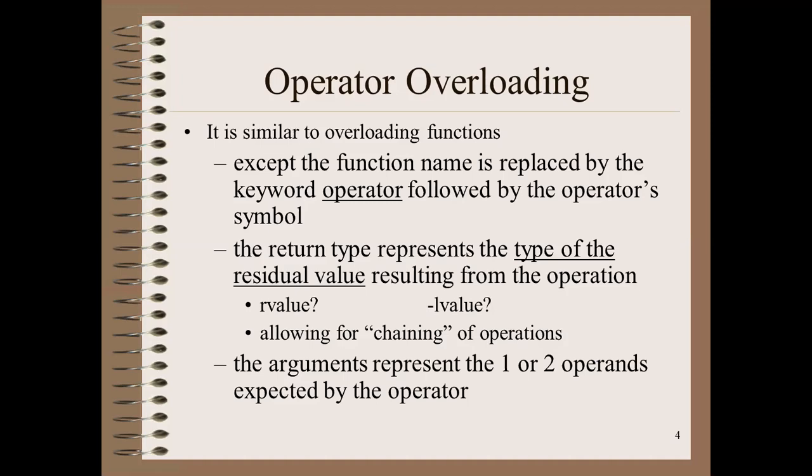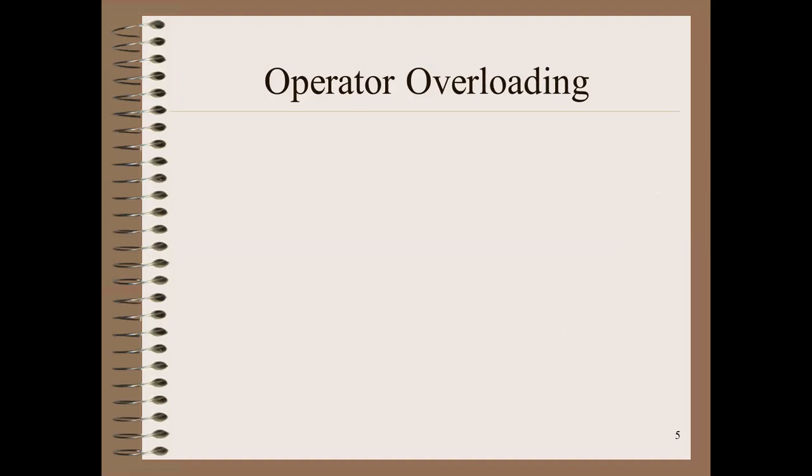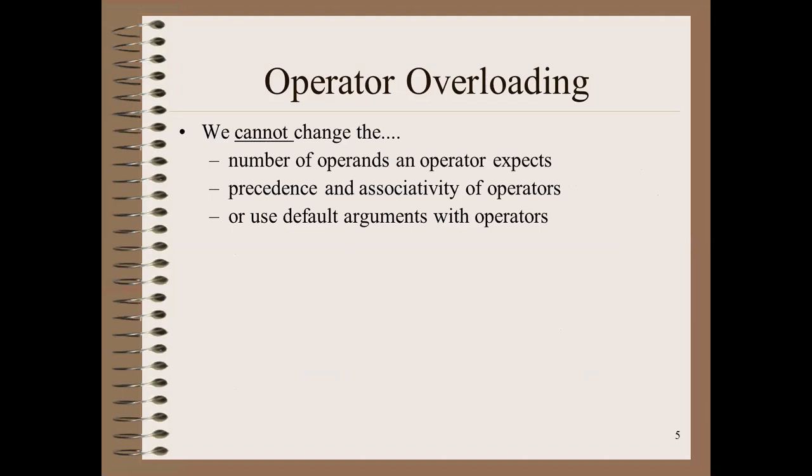If we have operators — some binary, some unary — we need to understand what kind of operator it is. What can we change in operator overloading? The first thing is that the number of operands of an operator cannot be changed. If there is a binary operator, it operates on two operands, and you can't change that in overloading. Besides, the operator precedence and associativity also cannot be changed.